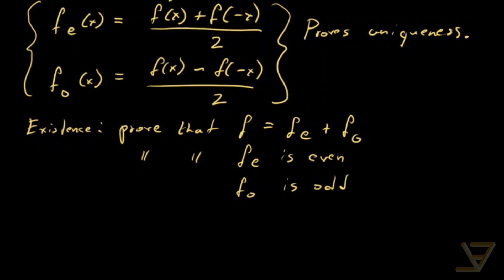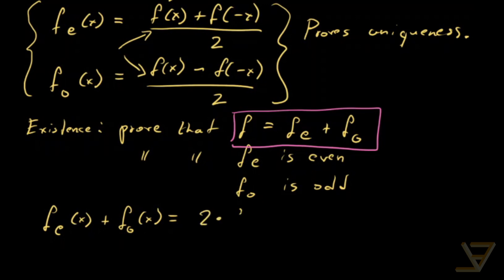First of all let's see what happens in terms of the sum whether the sum holds. We have f_e of x plus f_o of x is equal to we're going to be using this and this and if you take a look there's going to be some cancellation and we're left with two times f of x over two which is simply equal to f of x so we have this property.